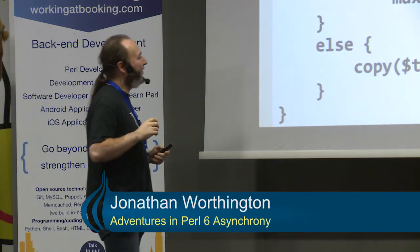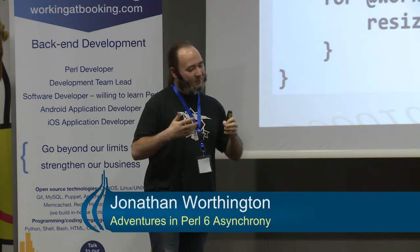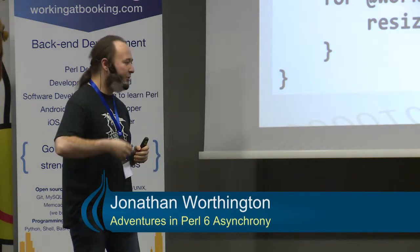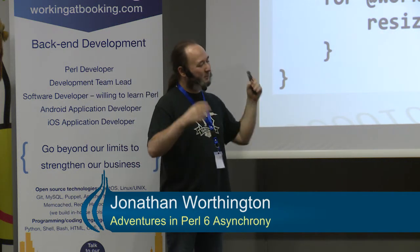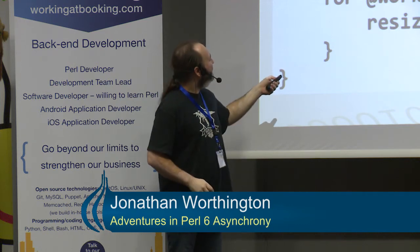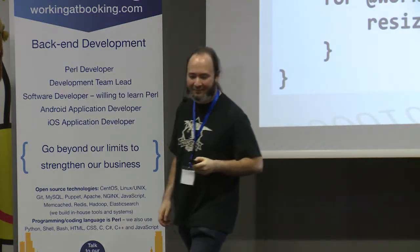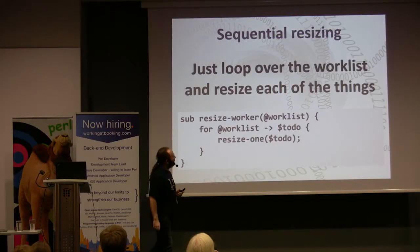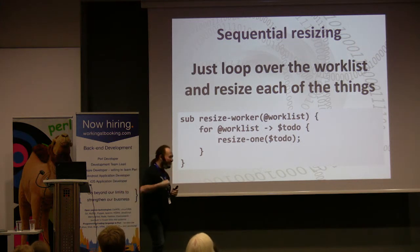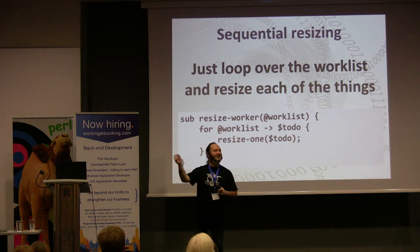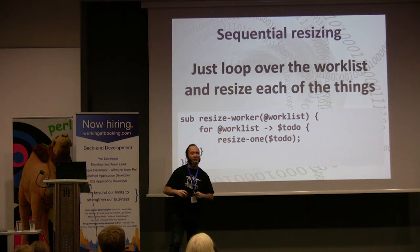Here is the simplest possible worker to go through my list an image at a time and resize it — nothing parallel going on yet. We just say for each thing in the work list, resize it. But how do I get parallelism? It's not just about going parallel, it's also how do I cancel it at some point and how do I log what it's doing? We're going to grow this code a little bit.